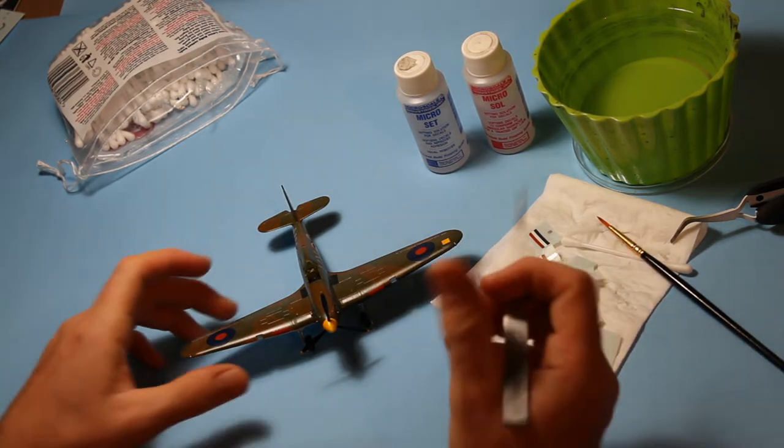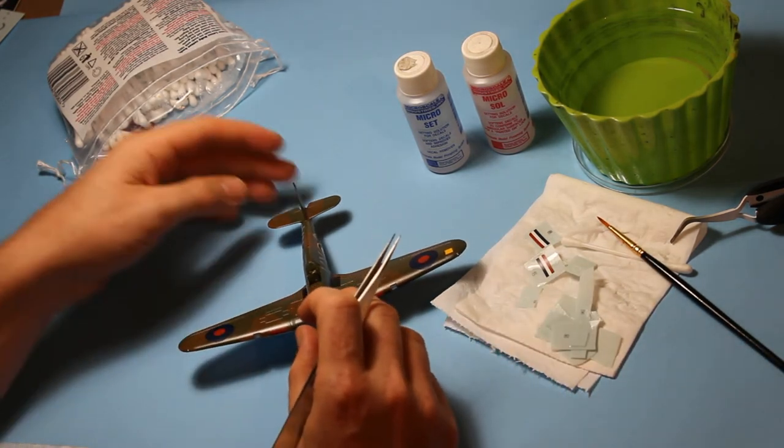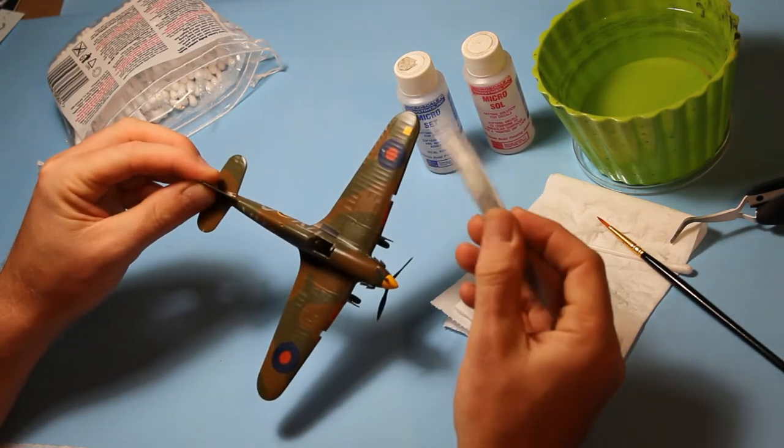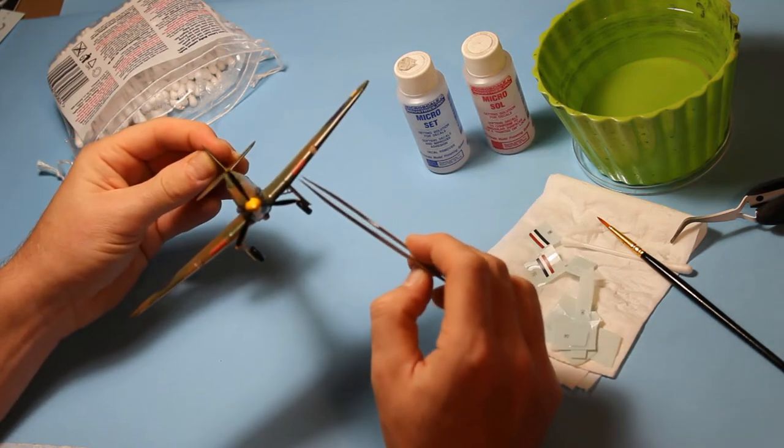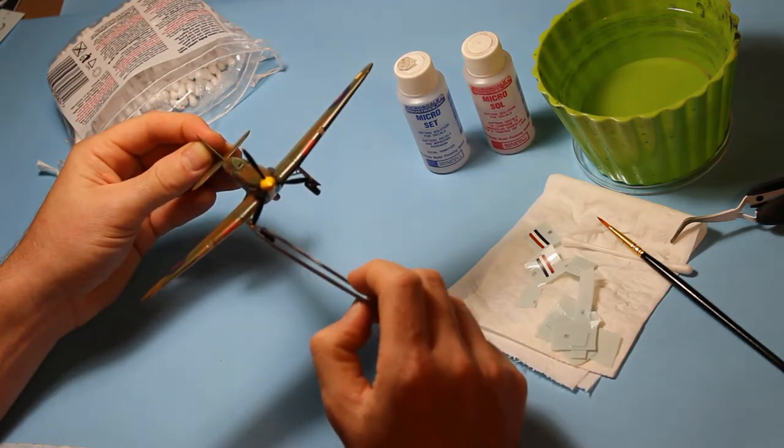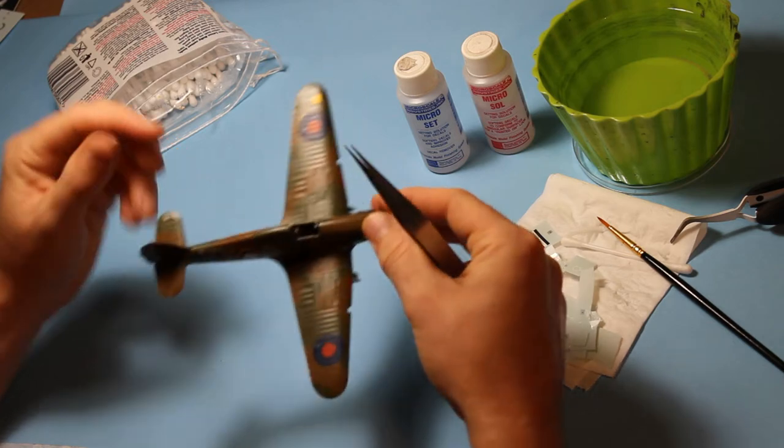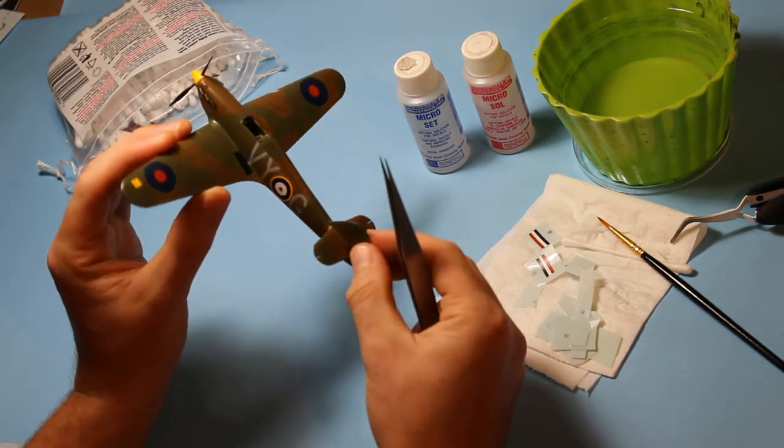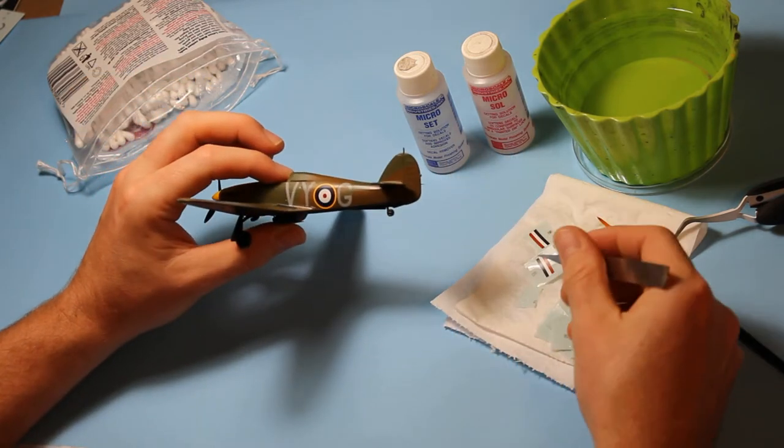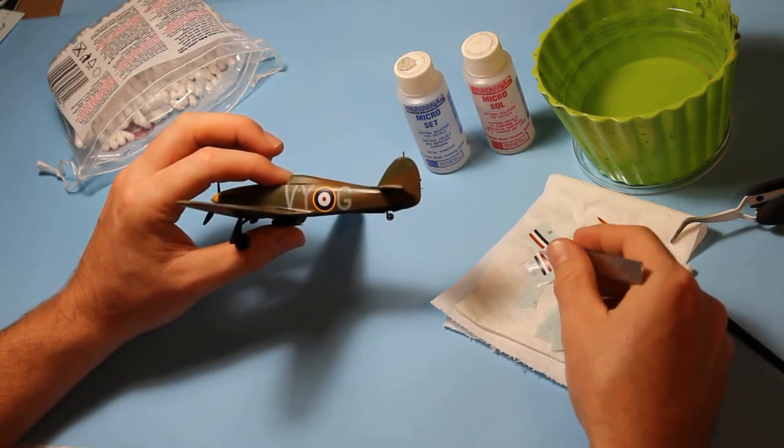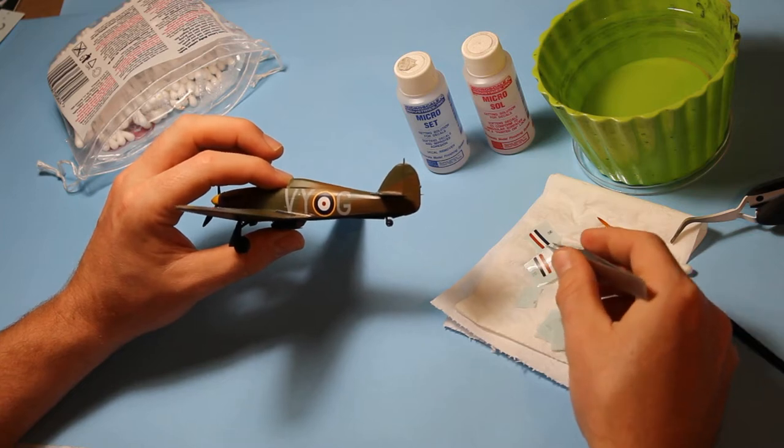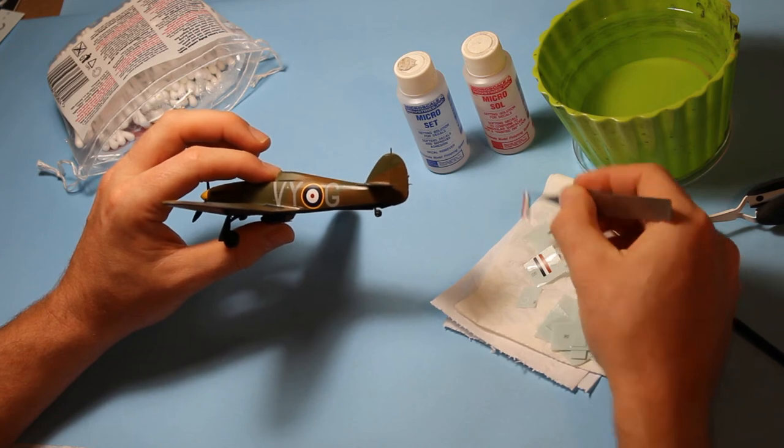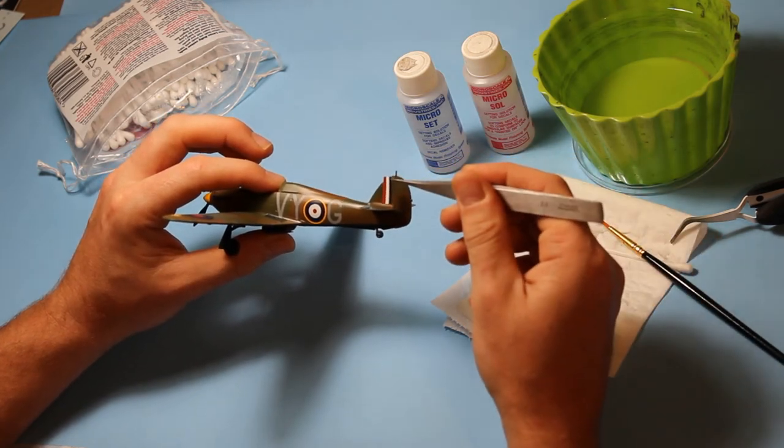So unfortunately the camera stopped halfway through. So I've moved on a little bit with the decaling but we haven't missed too much. I've added the yellow square up here and the covers for the gun barrels. Also I've put the G on. So now we're on to the tail. And we're going to put on number 10. These have been sitting a bit too long while I've been sorting out the camera.